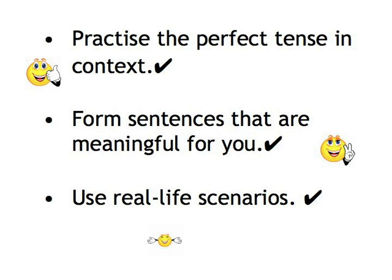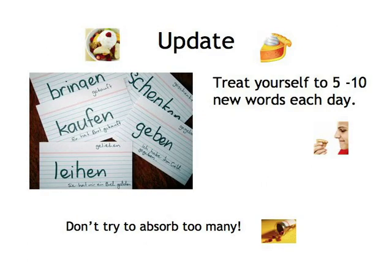We'll start with an update of your vocabulary cards, which we hope you've continued to write and work with. Take out all the verb cards from your stack and add the past participles and an example sentence in the perfect tense on the German side of the card. However, only do a few at a time — about 5 to 10 a day — for the next couple of weeks. That should pretty much cover all the verbs you've learnt so far. We don't want it to become too much of a chore or an overwhelming task.